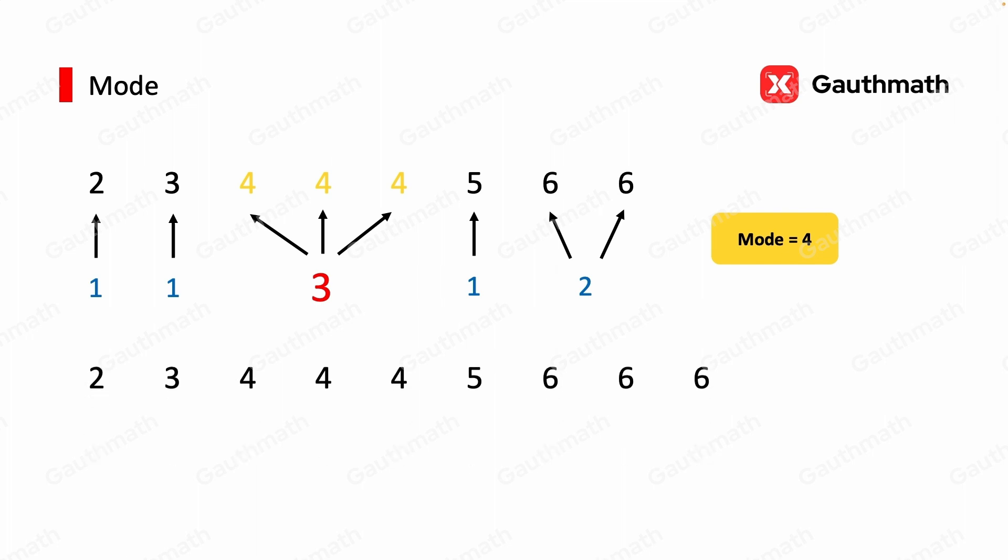We have one 2, one 3, three 4s, one 5, and three 6s. Notice we have three 4s and three 6s. That means both 4 and 6 are the most common values. And so we have two modes: 4 and 6.